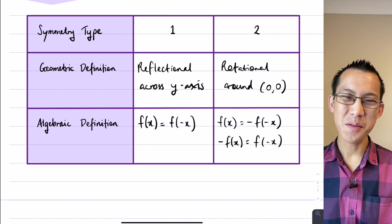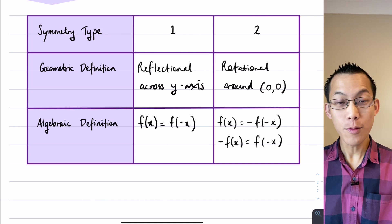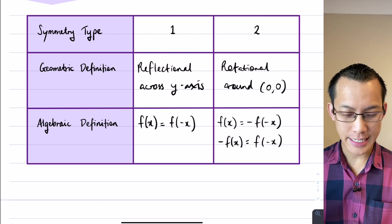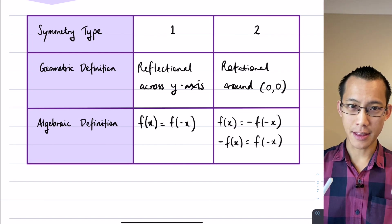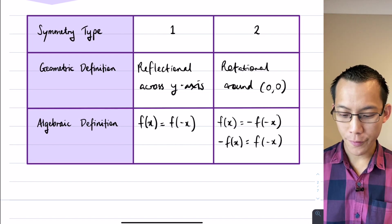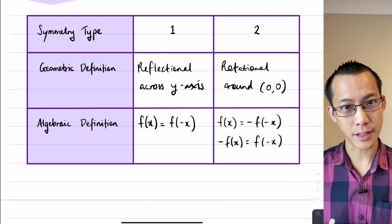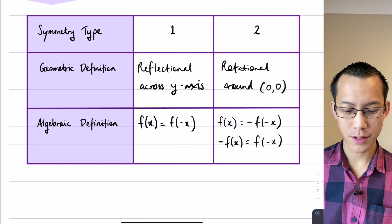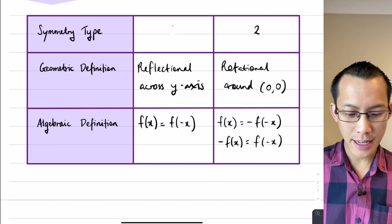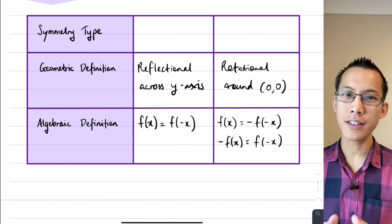So this is a way that we can describe, we can say, you know, even without looking at a picture, if I can test out and say, well if you put in negative x to this function, do you get out the same thing as if you put in x? Or if I put in negative x, do I get the opposite of if I put in x? This is an algebraic way to define these different symmetries.